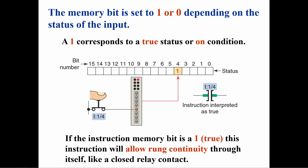The examine if closed instruction behaves very much like a normally open relay contact. When an external switch is closed, a 1 is placed at the address of the switch in the input table, and the examine if closed instruction becomes true and allows rung continuity, much like a normally open relay contact will allow current to flow when its coil is energized.